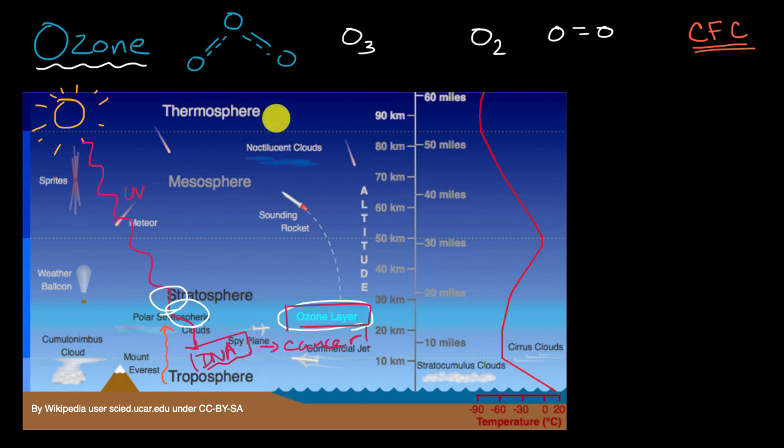Everything we've talked about so far is ozone in the stratosphere. But it turns out that ozone can actually also form lower in the atmosphere, in the place where we tend to spend our lives, in the troposphere. When ozone is down there, it's actually a bad thing.